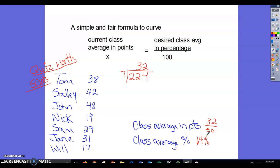What we can do is use this formula: we're going to take the current class average in points, which is 32, over x—that's what we're looking for. Then the desired class average in percent: what do you want your class average to be? 78, 80, 83, whatever you want. I mean it doesn't matter—let's do 80 just for this example. So we're going to do 80% over 100.